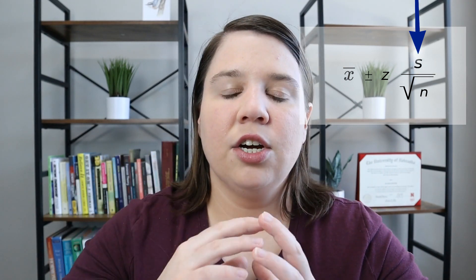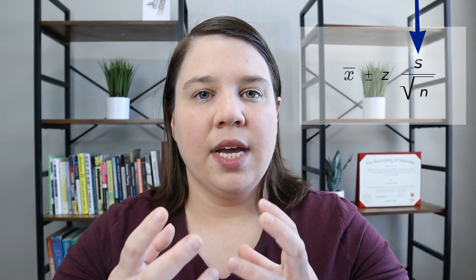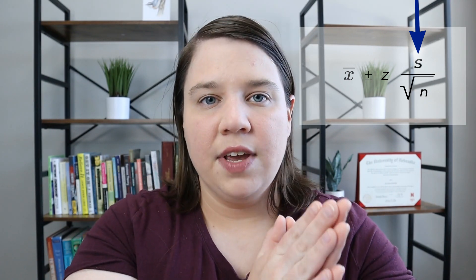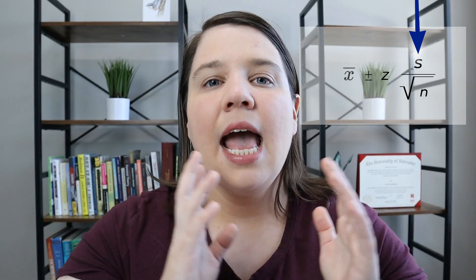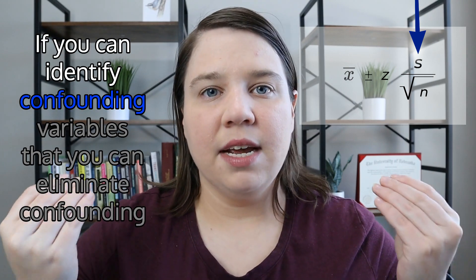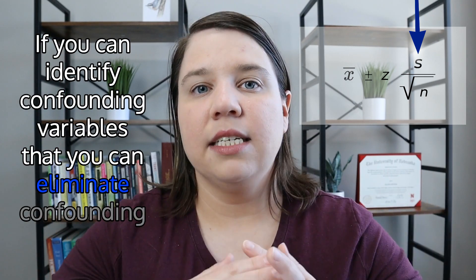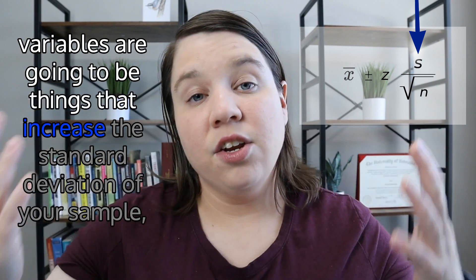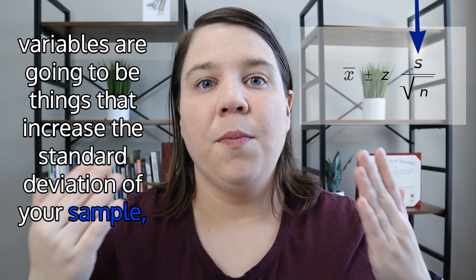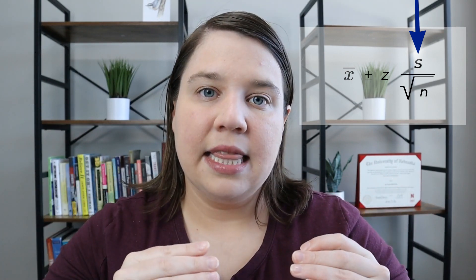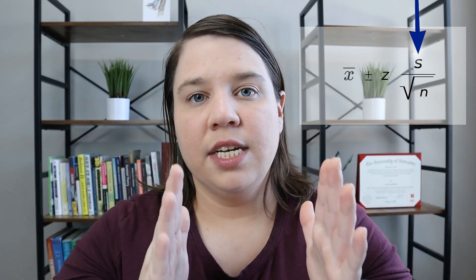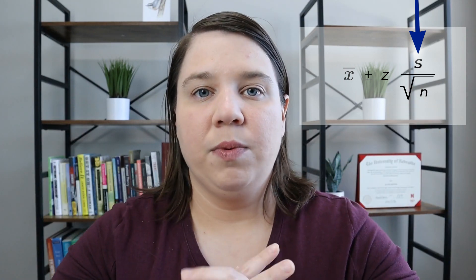The second characteristic you can alter is your standard deviation. You have a chance of decreasing the standard deviation of your sample if you can identify confounding variables that you can eliminate. Confounding variables are things that increase the standard deviation of your sample but aren't related to the specific experiment you're studying, so if you can find and eliminate them you can decrease your confidence interval and become more precise.